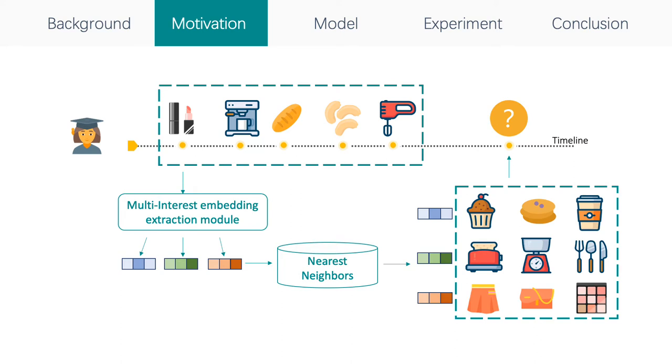More recent works propose to encode users' historical behaviors into users' varying interests by leveraging capsule routing mechanism. Nevertheless, previous methods model user preferences only taking into account the past behaviors of users, ignoring the potential future preference and failing to capture the time-involving chains of user diversified preferences.